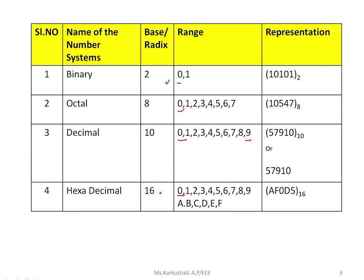In hexadecimal the base or radix is 16, so it goes from 0 to 15. But we need a single digit for 10 to 15. For 0 to 9 the usual digits are used; for 10 it is A, similarly B is for 11, C for 12, D for 13, E for 14, and F is for 15. Since 15 has two digits, in hexadecimal we need to represent it as a single digit — that's why we include alphabetic characters.